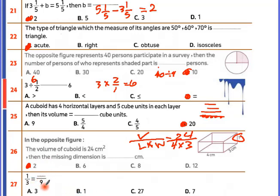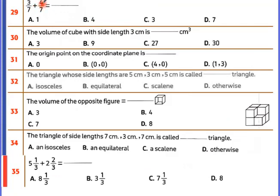1 over 3 equals 10 over 9 — the 3 became 9, so times 3. Then 1 times 3 equals 3. Also, 3 over 7 plus 4 over 7 equals 7 over 7, which equals the whole number 1. The volume of a cube with side length 3: volume equals side times side times side, so 3 times 3 is 9, times 3 is 27.